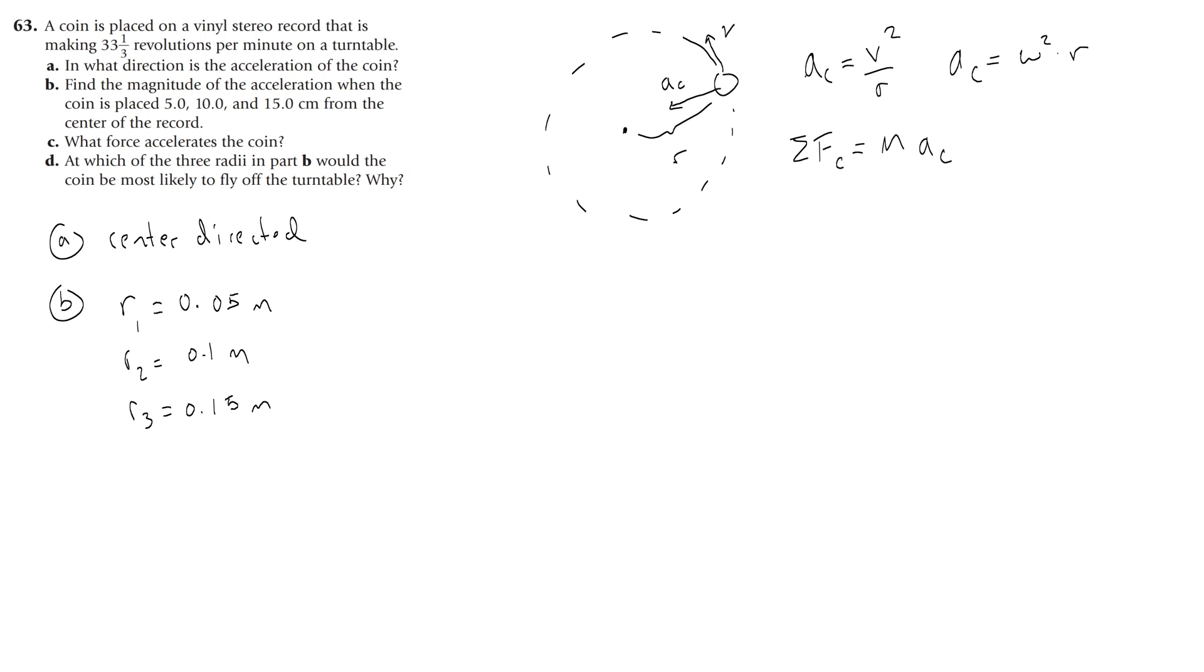Okay, then the next thing that you would need to do is take this 33.3, and make it your angular velocity, because it's telling you about how the object spins with time.